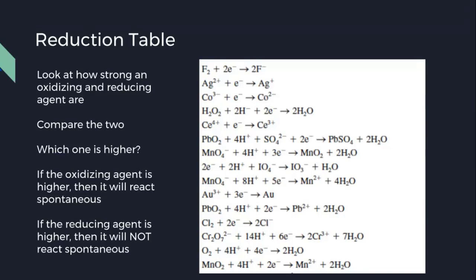If the oxidizing agent is higher than the reducing agent, the arrow will look something like this, and the reaction will occur spontaneously. If the reducing agent is lower than the oxidizing agents, then the reaction will not occur spontaneously, and the arrow will look something like this.